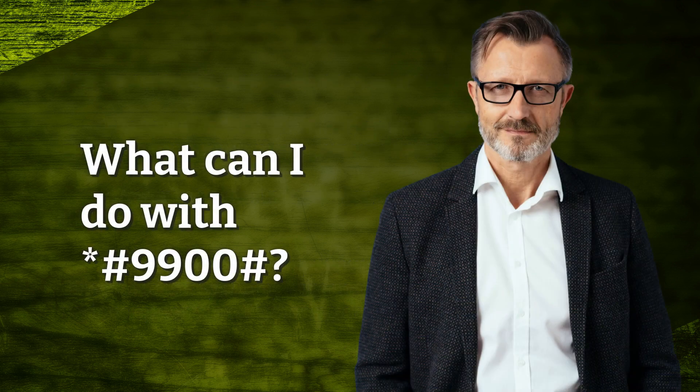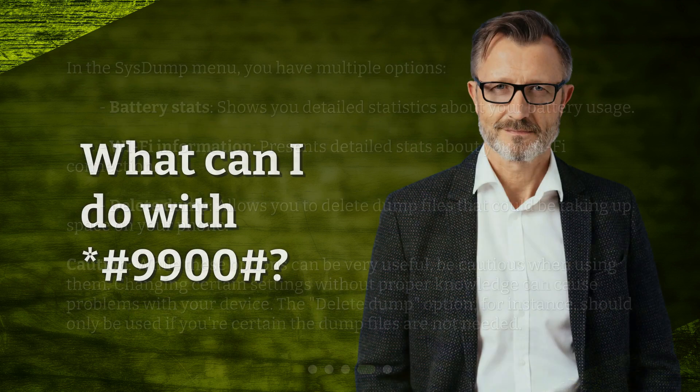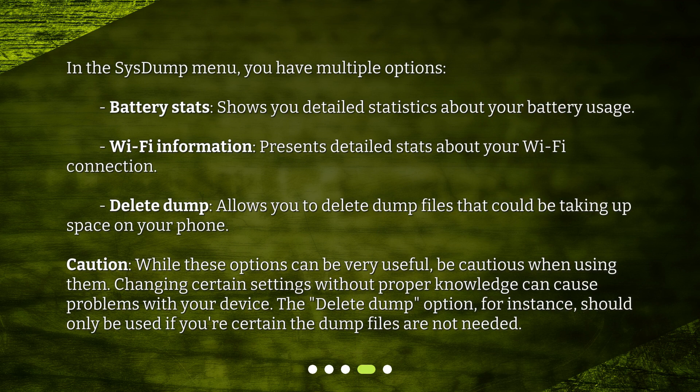What can I do with *#9900#? In the system dump menu, you have multiple options. Battery stats shows you detailed statistics about your battery usage. Wi-Fi information presents detailed stats about your Wi-Fi connection. Delete dump allows you to delete dump files that could be taking up space on your phone. Caution: while these options can be very useful, be cautious when using them, as changing certain settings without proper knowledge can cause problems with your device.